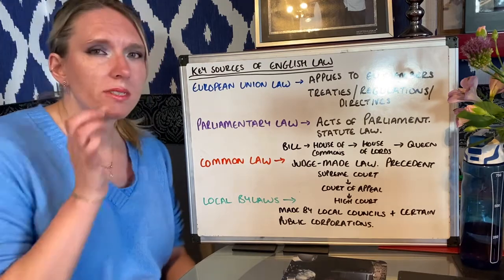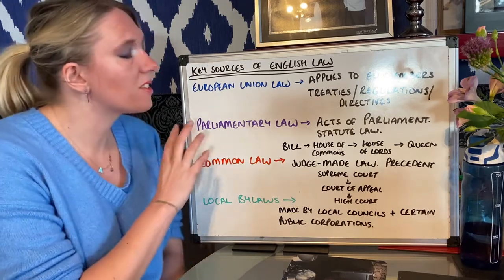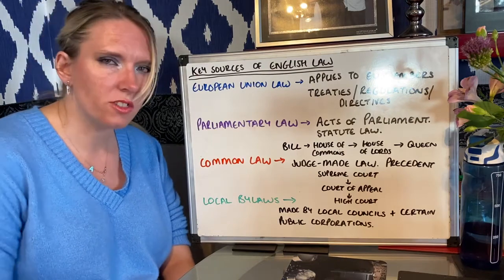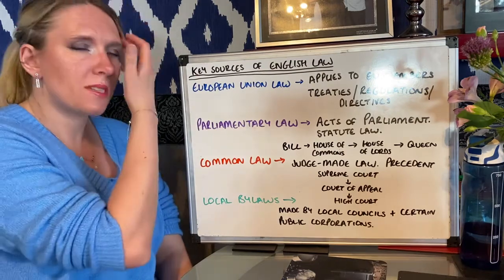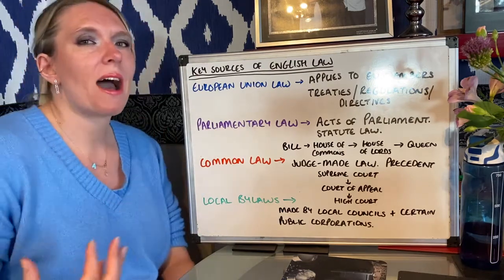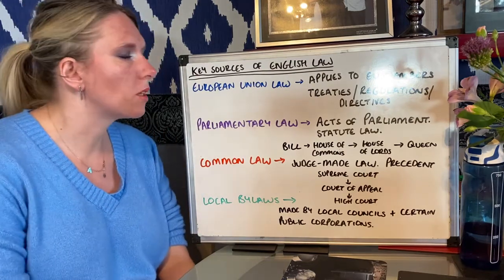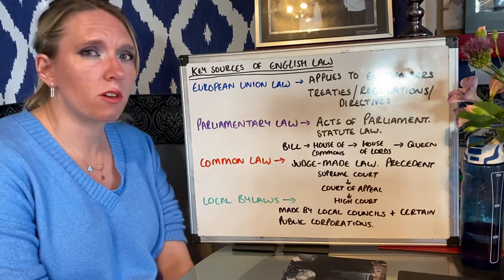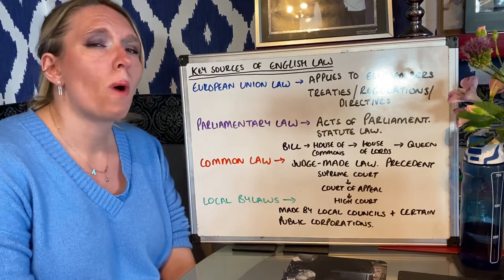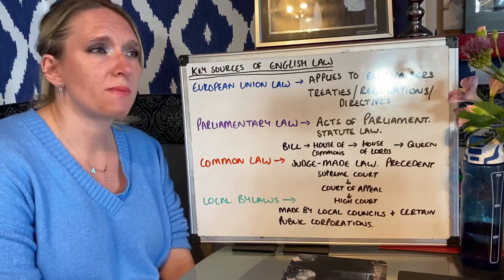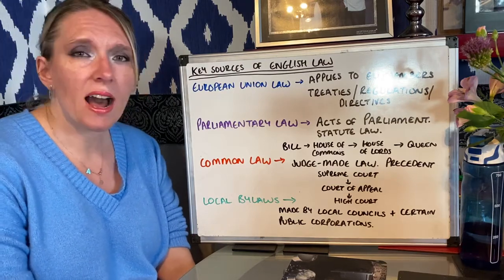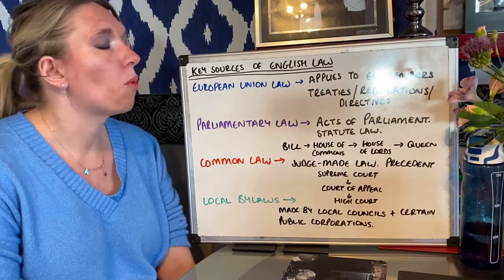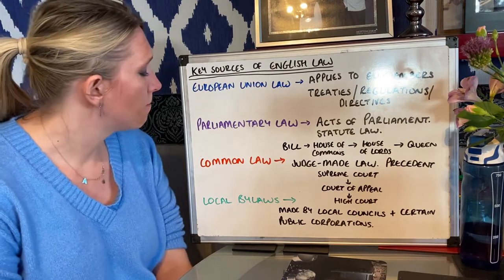Parliament also has a hand in some other types of law making called delegated legislation. This means they give their powers to other people. We've especially seen this during the coronavirus pandemic, where government has made some very fast, very quick rules about what can and can't be done during the pandemic.